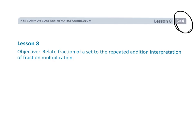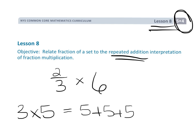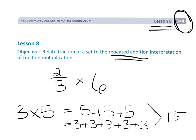All right, this is 5th grade, Module 4, Lesson 8, and we're going to start getting into the standard algorithm for multiplying a fraction by a whole number. We're getting into that standard algorithm today, but we're going to start by thinking about repeated addition. Remember, when you were learning your multiplication facts, 3 times 5 could be thought of as 5 plus 5 plus 5, or 3 plus 3 plus 3 plus 3 plus 3, and they both give us 15. We're going to take this idea from 3rd grade and apply it to fractions.